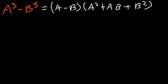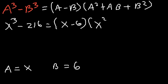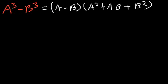Let's try: x³ - 216. Here a = x and b = cube root of 216 = 6. So this factors as (x - 6)(x² + 6x + 36).